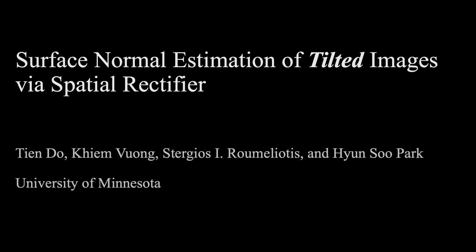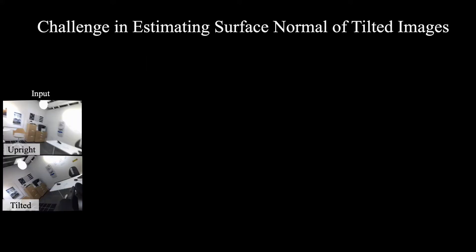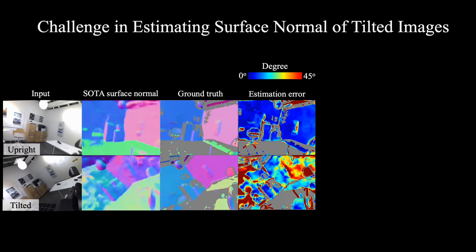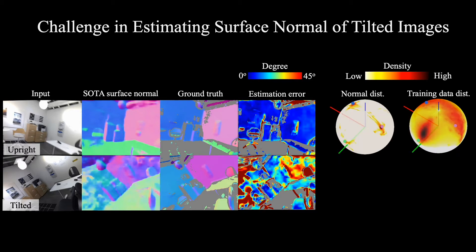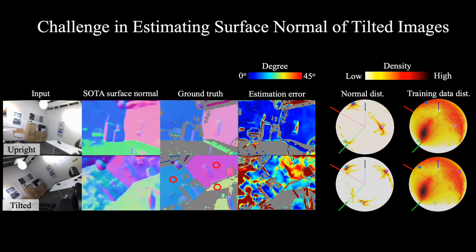We present a method for surface normal estimation of tilted images. Estimating surface normals from tilted images is challenging. State-of-the-art methods including FrameNet are not applicable to estimate surface normals of tilted images, while showing strong performance on upright images. This is mainly caused by the mismatch between the distributions of training and testing data, as there is a distribution gap for the tilted surface normals.